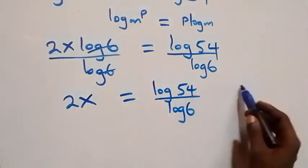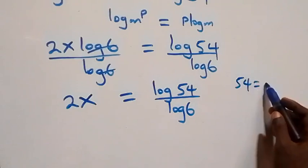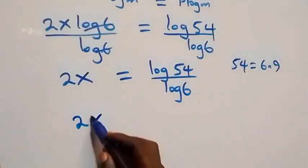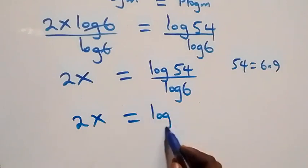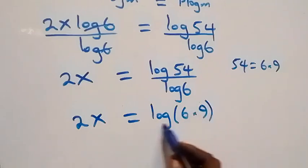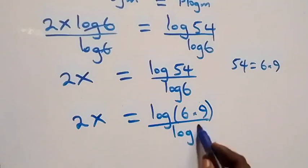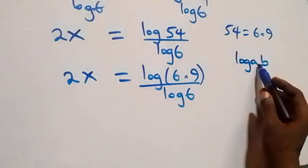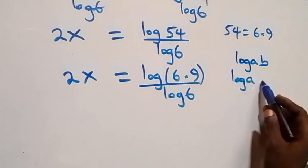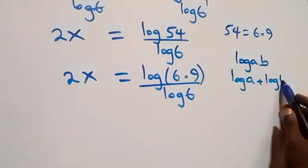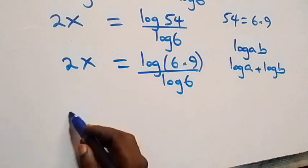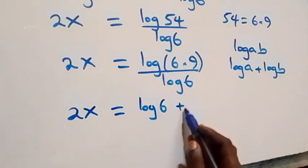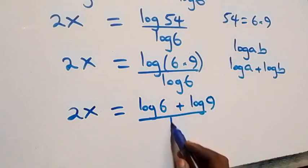Next, we express 54 as 6 times 9. So what we have becomes 2x equals to log of (6 times 9) over log 6. This follows from when we have log of a times b, which can be written as log a plus log b. So 2x equals to (log 6 plus log 9) over log 6.